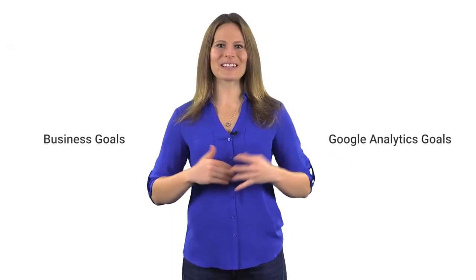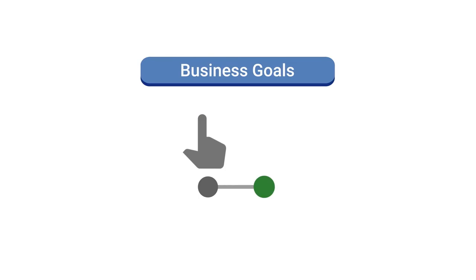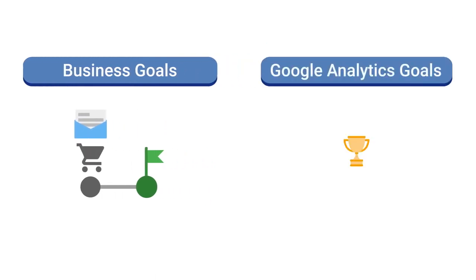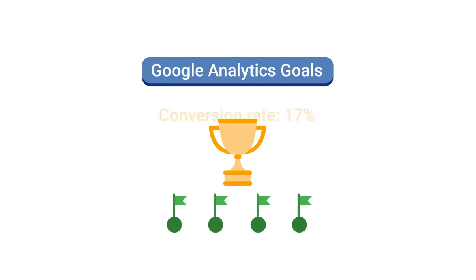There are many other ways to analyze campaign data which we'll cover in an advanced course. There are two types of goals: business goals and Google Analytics goals. Business goals are actions you want your users to take on your website — each time a user completes one of these, we call this a conversion. In Google Analytics, you can use a feature called Goals to track these conversions. Once you configure goals, Analytics will create conversion-related metrics like the total number of conversions and the conversion rate — the percentage of users that converted.